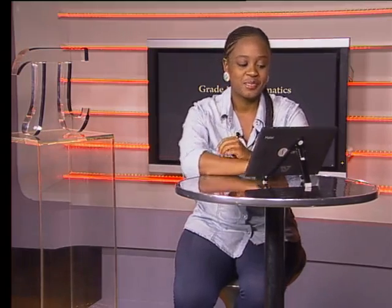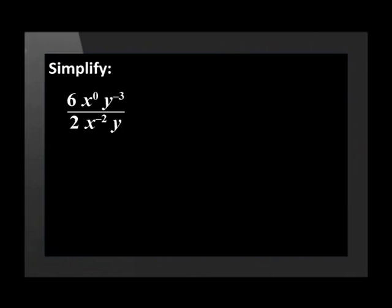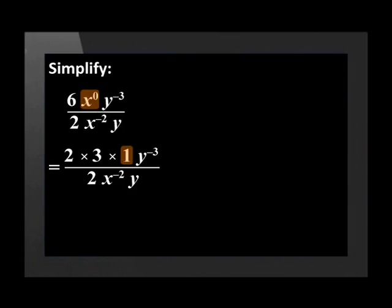Let's try an example: simplify the exponential expression six times x to the power of zero times y to the power of negative three, divided by two times x to the power of negative two times y. We know the six in the numerator can be written as a product of its prime factors, so we'll replace the six with two times three. And x to the power of zero has the value of one, so let's replace that.